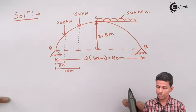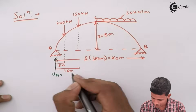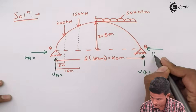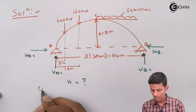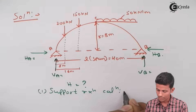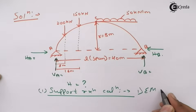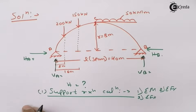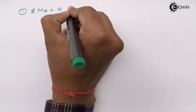We need to calculate the horizontal thrust H. For this, we calculate VA, HA, VB, and HB. First, we perform support reaction calculation. We calculate: first, the summation of moments; second, summation of FY; and third, summation of FX.